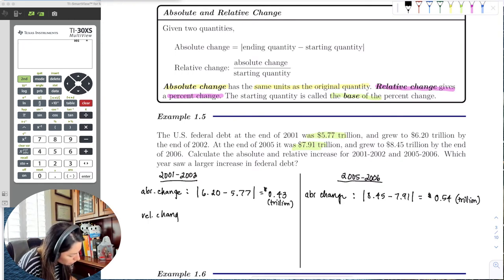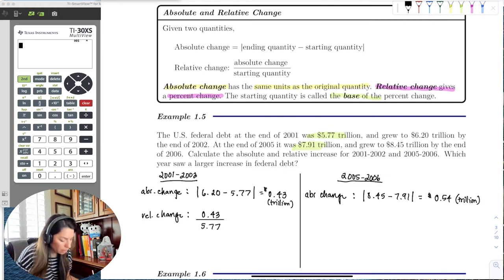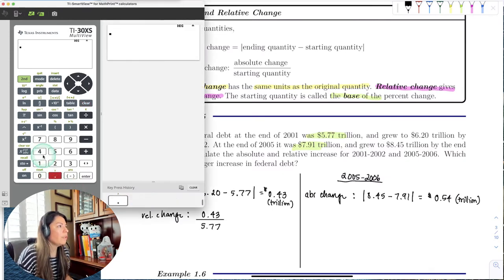So the relative change would be this absolute change of 0.43 divided by that starting quantity which was 5.77. So if I went ahead and put that in the calculator, 0.43